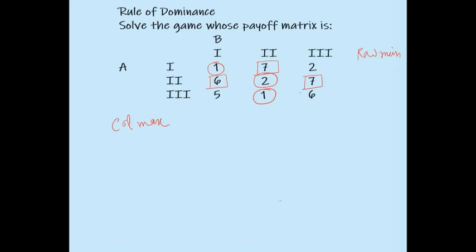The circled and squared entries do not share a common value, so this payoff matrix does not have a saddle point. Now we will use the rule of dominance to solve this game with the given payoff matrix.